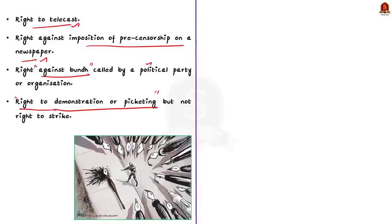Apart from this, freedom of press, freedom of commercial advertisement, right against tapping of telephonic conversation, and right to know about government activities are also part of this right. Since the government has no monopoly on electronic media, the right to telecast and the right against imposition of pre-censorship on newspapers are also included under Article 19(1)(a).